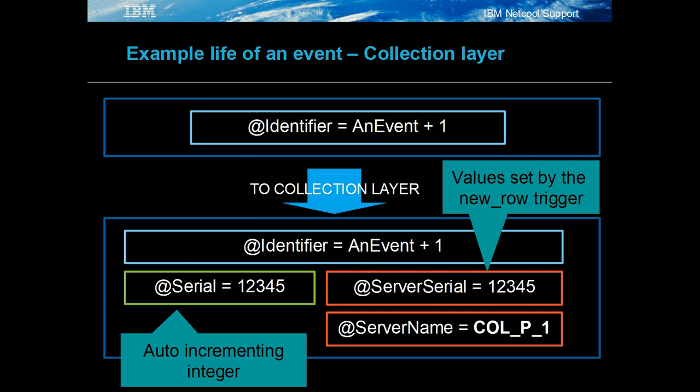The col_new_row trigger assigns the server name and server serial, with the server serial being the same as the assigned serial — one, two, three, four, or five — and the server name being the name of the object server, in this case col_p_one.